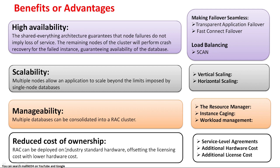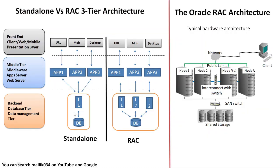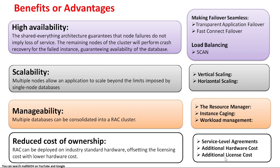The fourth advantage is reduced cost of ownership. Oracle offers different SLA categories for RAC databases — silver, gold, diamond, and platinum — each with different service level agreements and response times. In standalone, you need four databases, four instances, four Oracle software installations, and four licenses. Whereas with RAC, you purchase only one license to support n number of applications. Additional hardware and licensing costs are minimized. These are the main benefits and advantages of having a RAC.